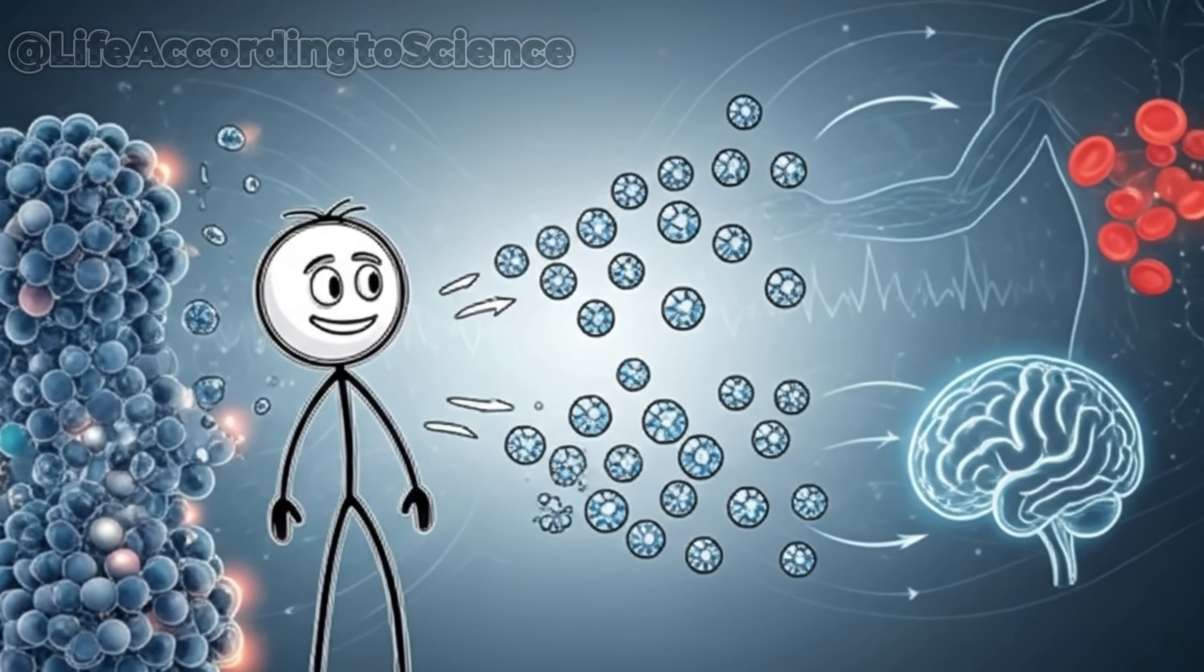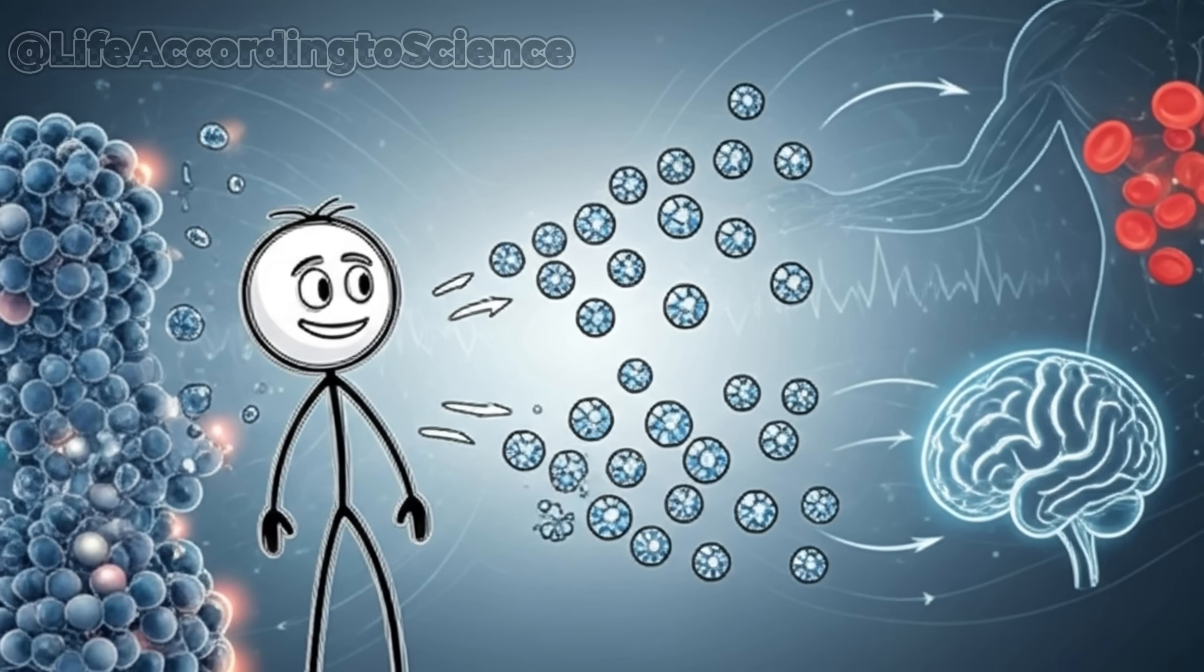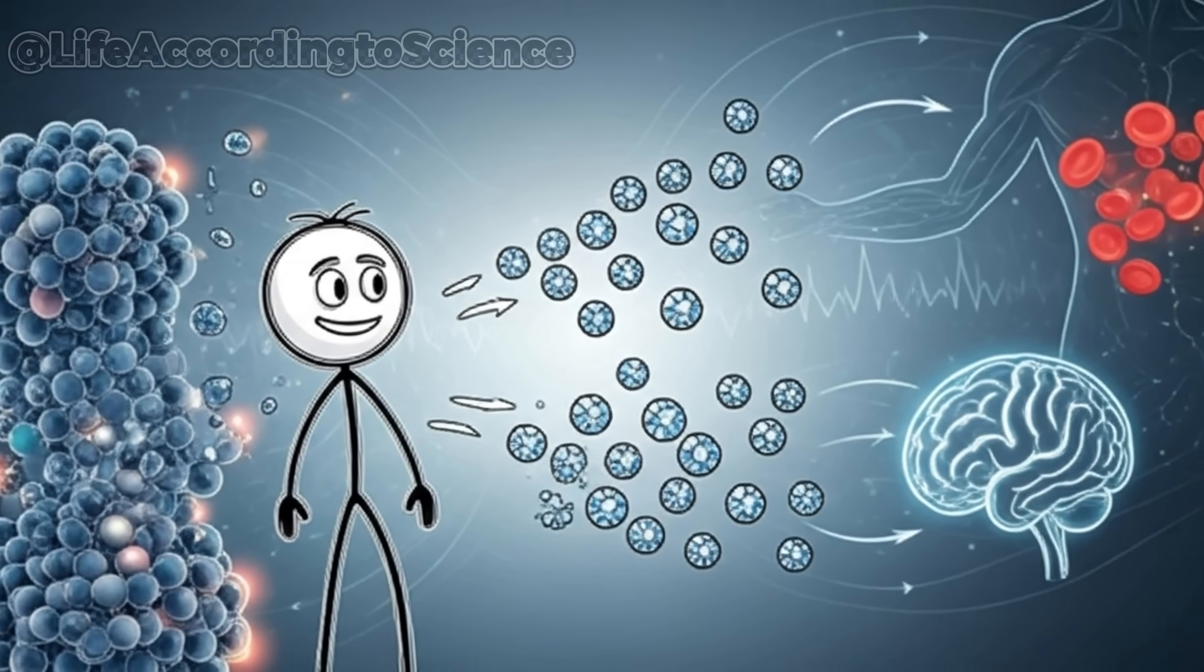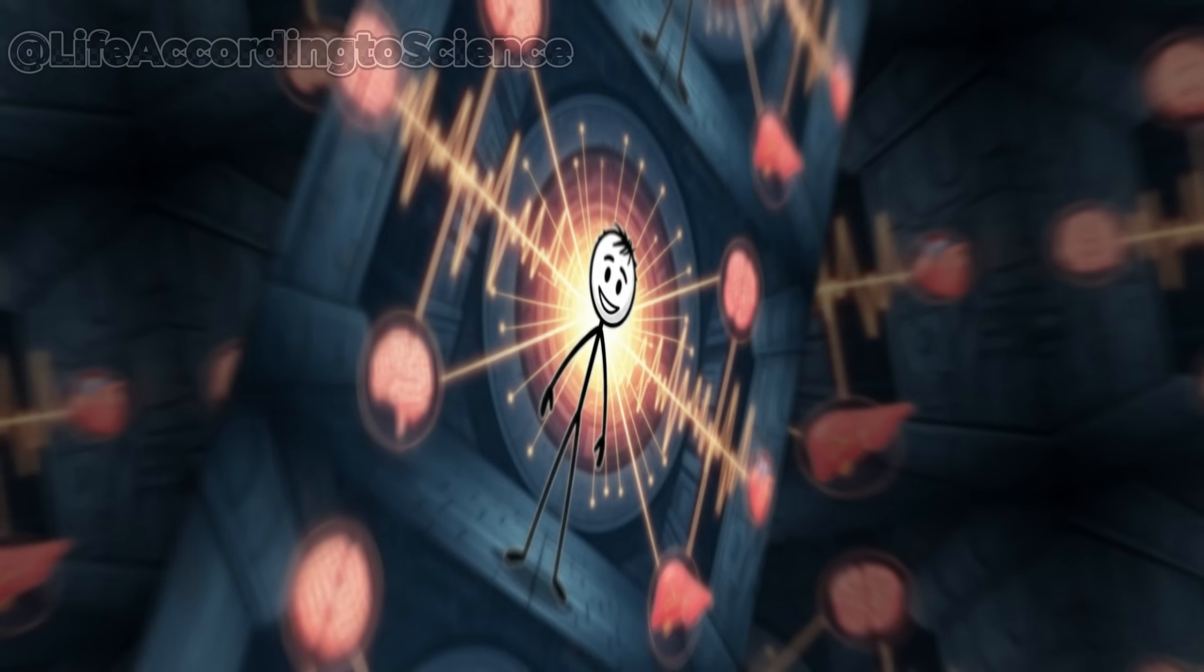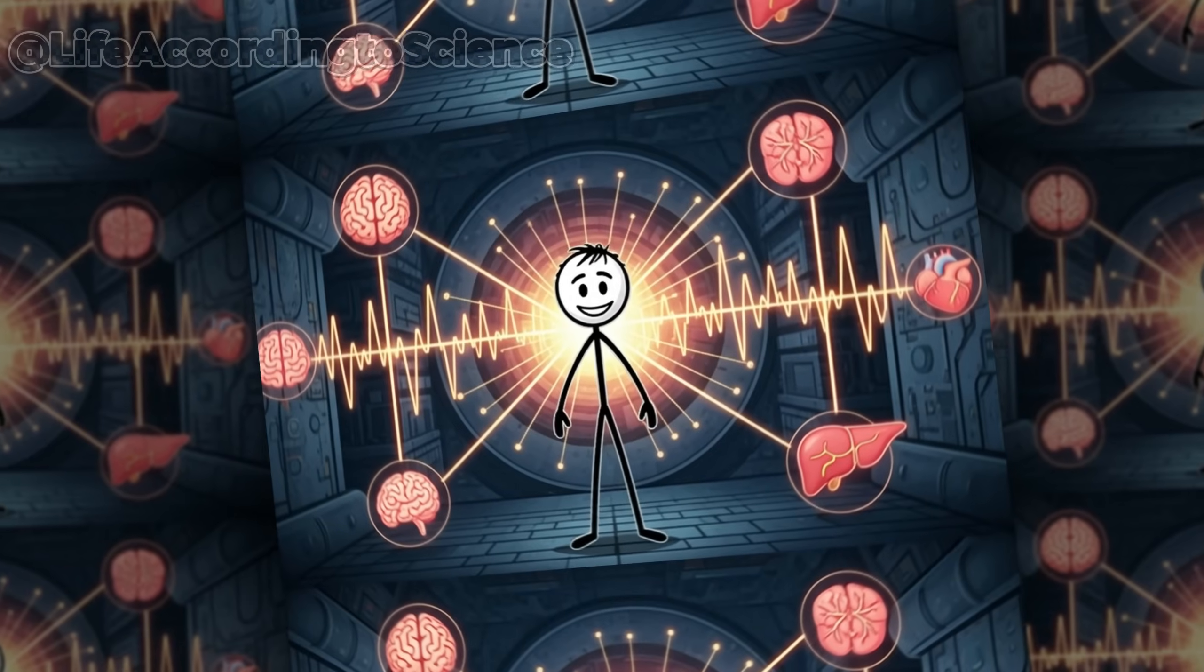When your body breaks down triglycerides from fat cells, it releases glycerol and fatty acids. The glycerol is turned into glucose for tissues that still need it, like red blood cells, while the fatty acids feed your muscles and brain.